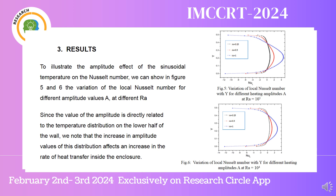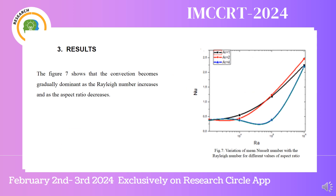These two figures illustrate the amplitude effect of the sinusoidal temperature on the Nusselt number. Figures 5 and 6 show the variation of the local Nusselt number for different amplitude values at different Rayleigh numbers. Since the value of the amplitude is directly related to the temperature distribution on the lower half of the wall, an increase in amplitude values causes an increase in the rate of heat transfer inside the enclosure. The last figure shows that convection becomes gradually dominant as the Rayleigh number increases and as the aspect ratio decreases.